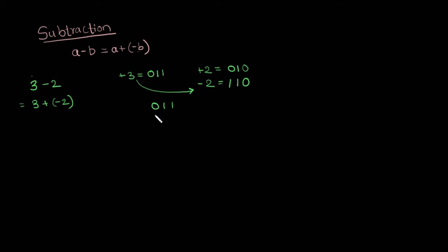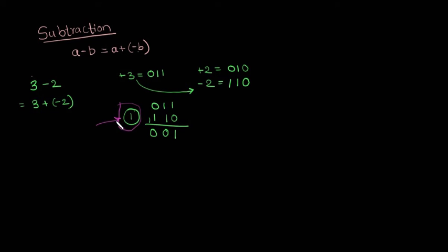We add the two numbers: 1 plus 1 is 0, carry a 1 forward; 0 plus 1 is 1; 1 plus 1 is 0, carry a 1 forward. You might be thinking what this carry-out is — for now, just ignore it. In the next video we will look at overflow in binary addition and subtraction in the two's complement system. So we got the value of 1. 3 plus minus 2 is 1. We got the same value.